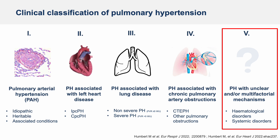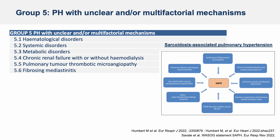Group 5 is where PH is secondary to other diseases in ways that are not well understood. Inside this group you can find hematological disorders, systemic disorders, metabolic disorders, chronic renal failure, fibrosing mediastinitis, pulmonary tumor thrombotic microangiopathy. A frequent cause in Group 5 PH is sarcoidosis-associated pulmonary hypertension. This specific cause is classified in Group 5 because there are several mechanisms inducing PH.